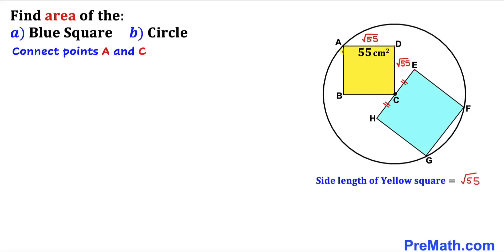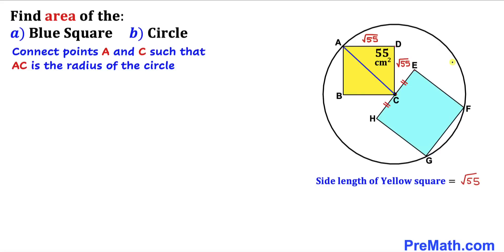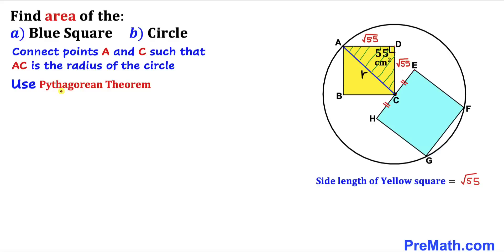Now let's connect points A and C. We can see that AC is the radius of the circle, so let's call this length R. Focusing on triangle ADC, since we are dealing with a square, angle ADC is 90 degrees, so we are going to use the Pythagorean theorem.